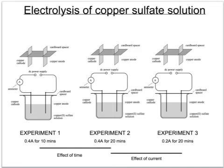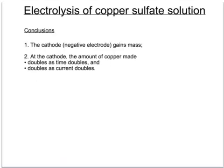A third experiment would look at the effect of a change in current. This one has again 20 minutes or 1200 seconds, but this time it would use 0.2 amps rather than 0.4 amps. So the difference between experiment two and experiment three is the difference in current. In each of the three experiments, the cathode or negative electrode gains mass as copper is deposited. The amount of copper made doubles as the time doubles, and also doubles as the current doubles.